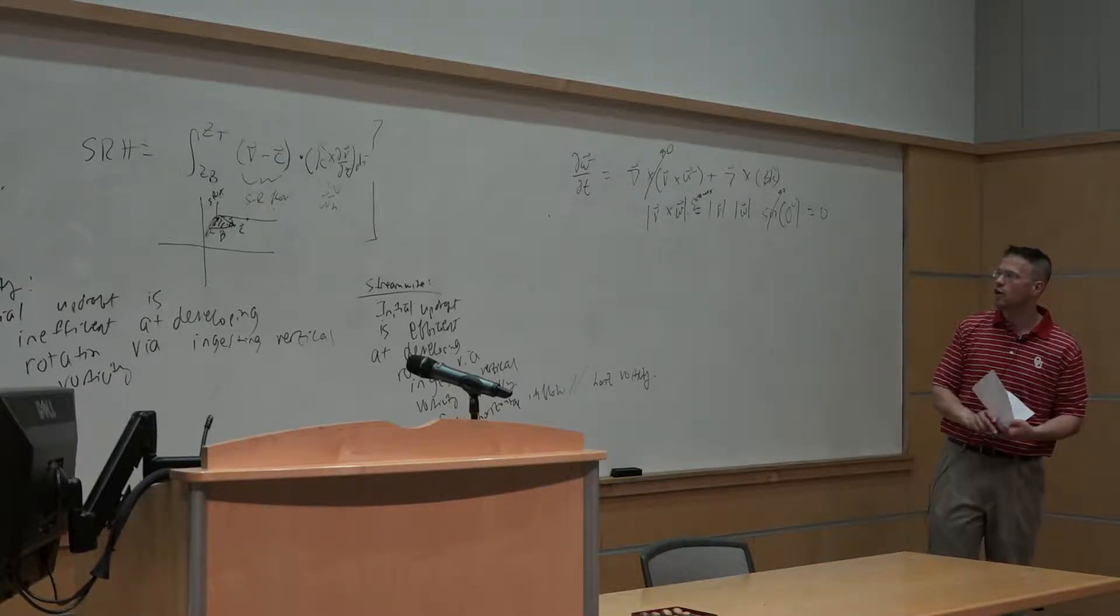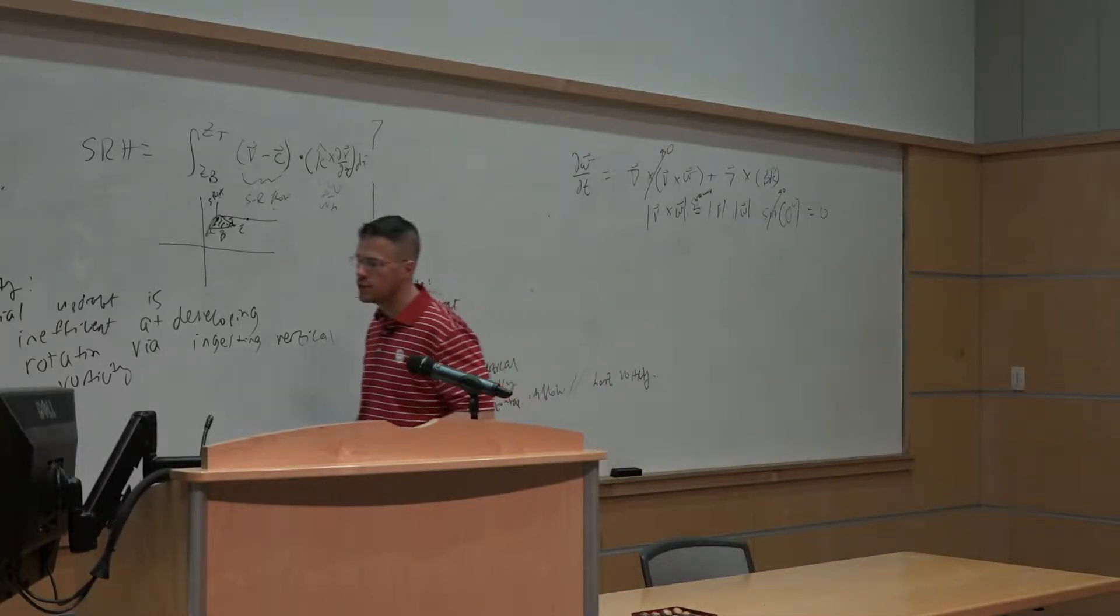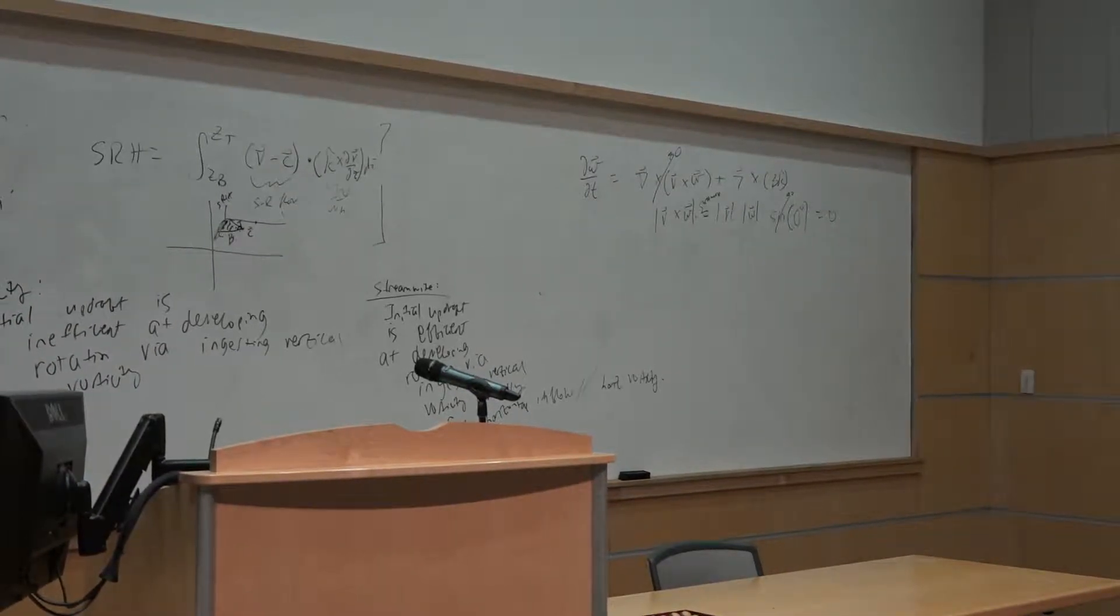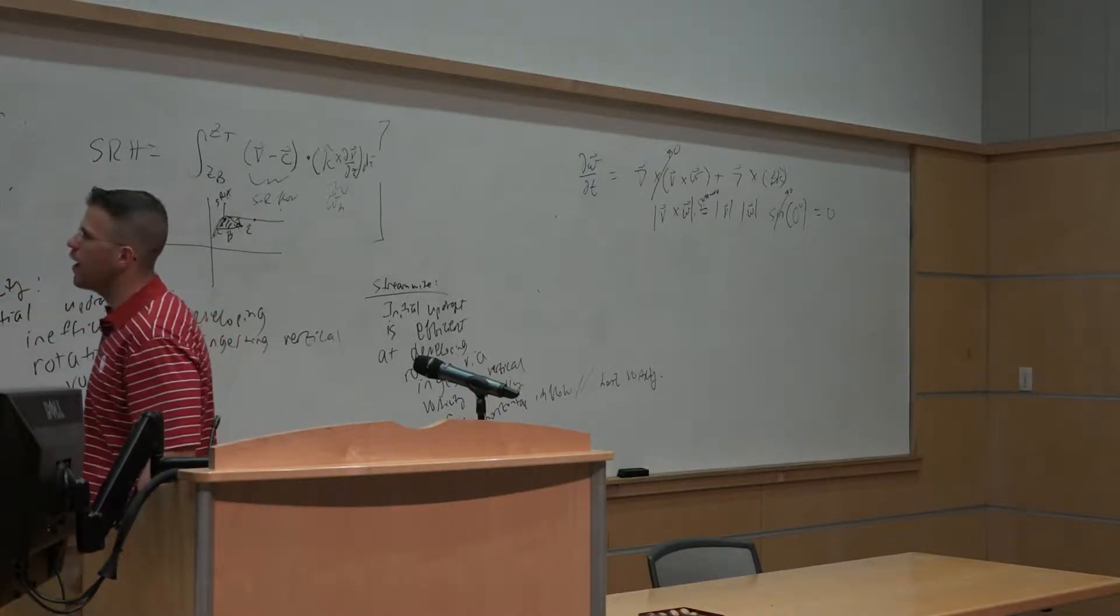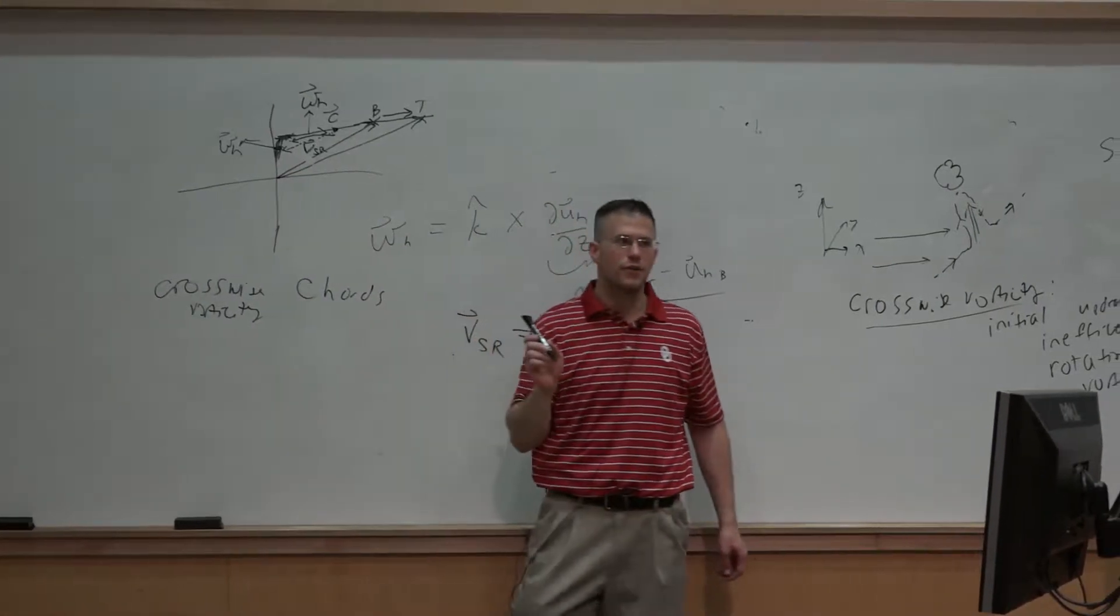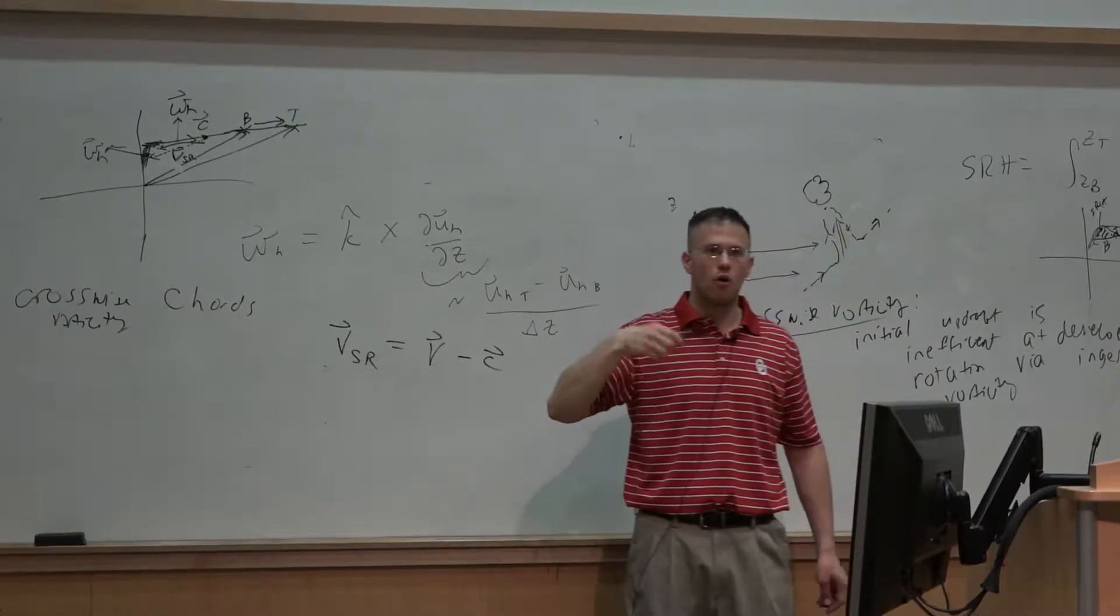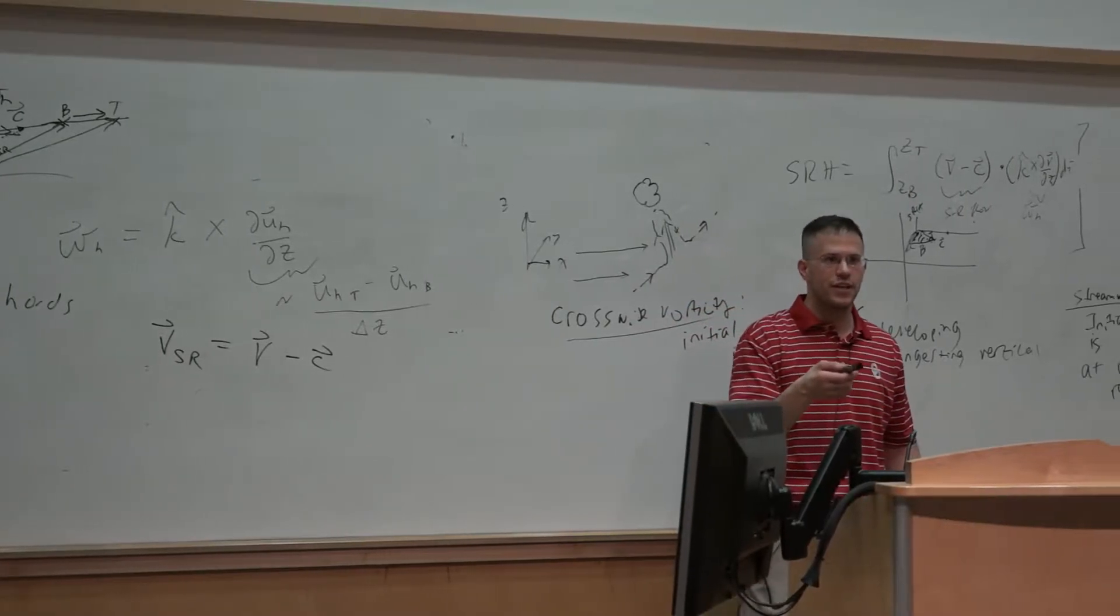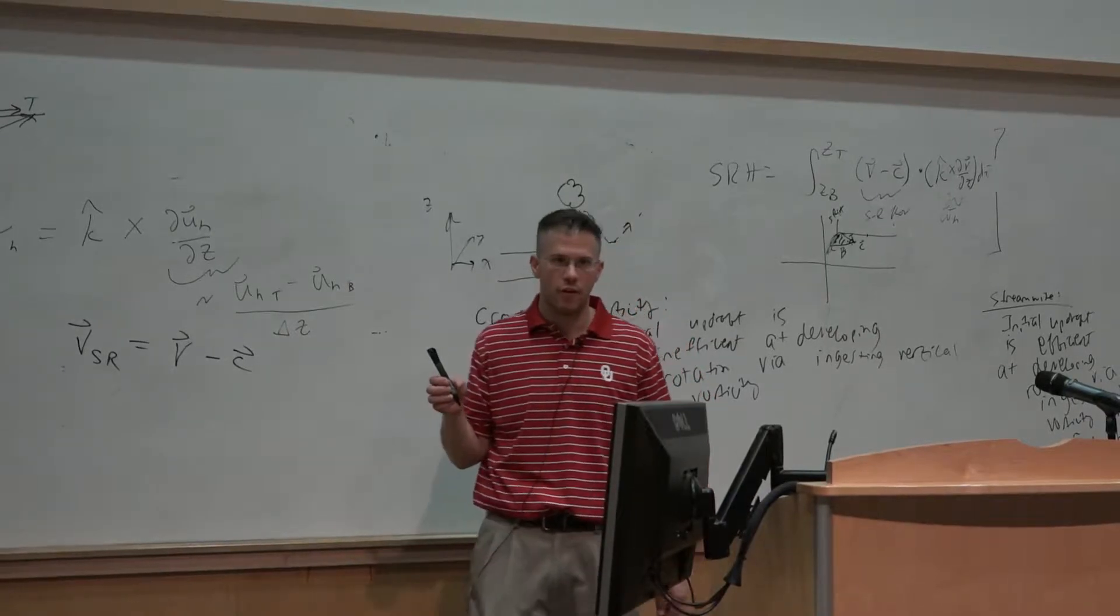Now I want to bring this back around, this argument here of streamwise vorticity versus crosswise vorticity, and talk about how it relates to everything that we've talked about from this shear term. Once again, when we're dealing with a hodograph with some curvature and a component of the horizontal vorticity that is supporting those horizontal inflow residing along those slinkies effectively, a horizontal vorticity that then immediately can be ingested into the vertical once we have the updraft get going.